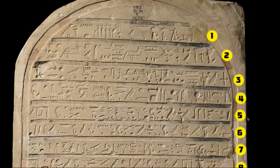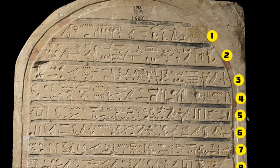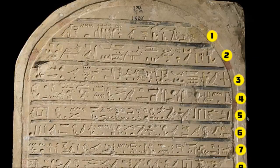Now for step two. Step two is to identify the glyphs. By identifying them, you have to know what the glyph represents in terms of how it's transliterated — whether it represents a single consonant, two consonants, three consonants, and so on.